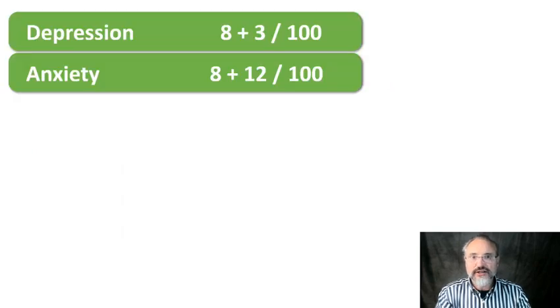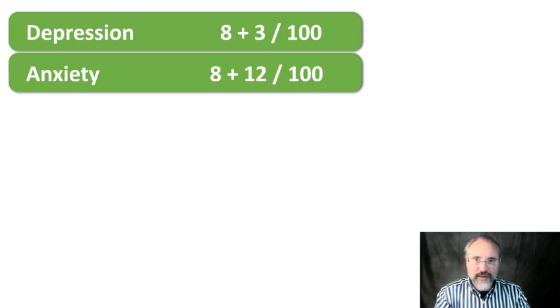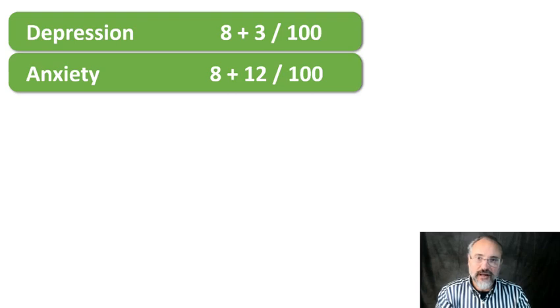So let me get started with the big ones: depression and anxiety. Eight out of 100 people have both depression and anxiety. An extra 3% of the population suffer from depression without anxiety, and an extra 12% suffer from anxiety. These are huge numbers — a big part of the population.